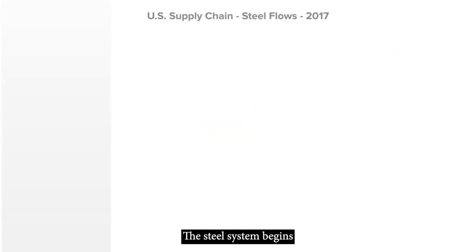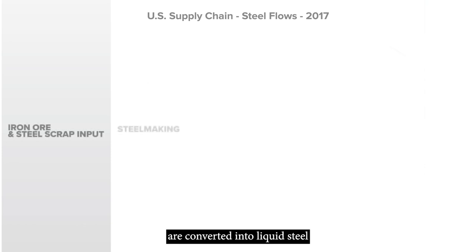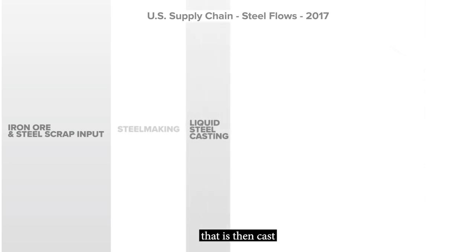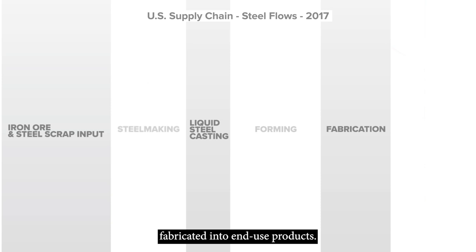The steel system begins with the key ferrous material inputs, iron ore and steel scrap, which in steelmaking are converted into liquid steel that is then cast and formed into components that are then fabricated into end-use products.